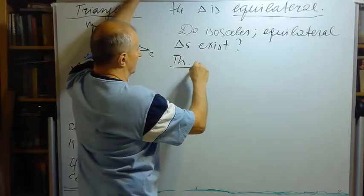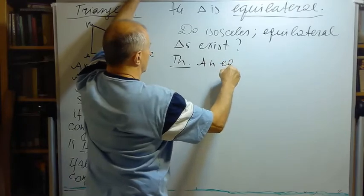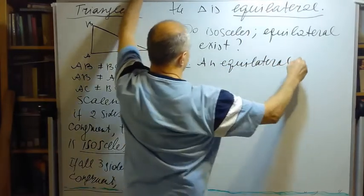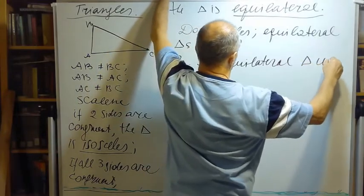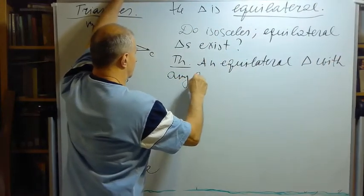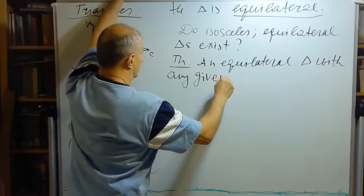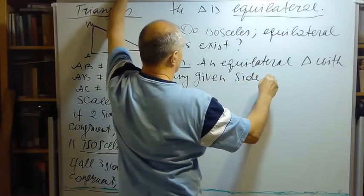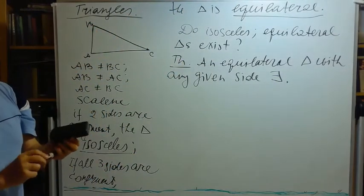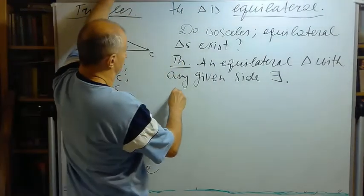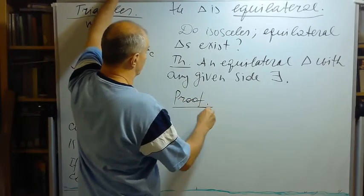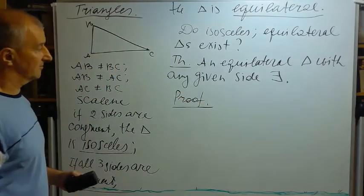Theorem: An equilateral triangle with any given side exists. This is actually the first theorem, I think, in the Elements of Euclid. Proof: